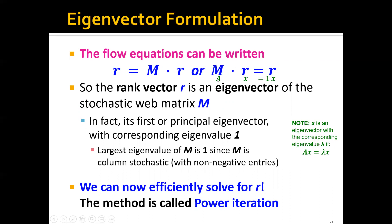Here A is M, x is r, and lambda equals one. In fact, r is the eigenvector for matrix M and its first or principal eigenvector with the corresponding eigenvalue one. You can prove that the largest eigenvalue of M is actually one, since M is column stochastic with non-negative entries.